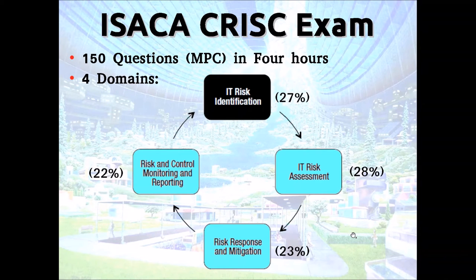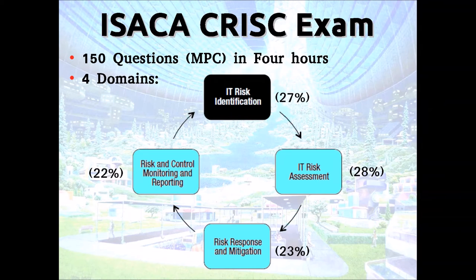In the context of ISACA, risk identification is identifying what could go wrong. Generally that means looking at assets — what do we have — the threats, what could go wrong with it, and the vulnerability. For example: the asset is a guitar, the threat is fire, and the vulnerability is that the guitar is made of wood and it's flammable.